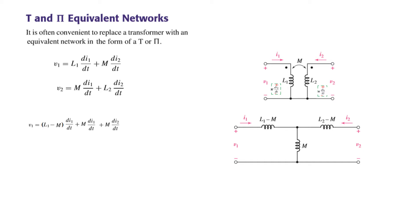Writing the KVL voltage equation: V1 equals this inductance (L1 minus M) times di1/dt, and since i1 also flows through M, we add M·di1/dt, plus the effect of i2 through M giving M·di2/dt. Simplifying, the M·di1/dt terms cancel, leaving L·di1/dt plus M·di2/dt — the same result as obtained from the transformer network.